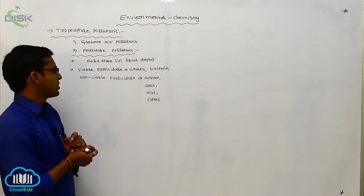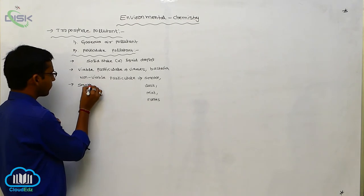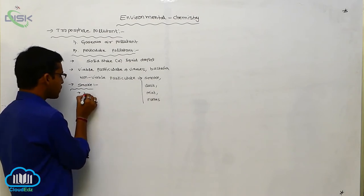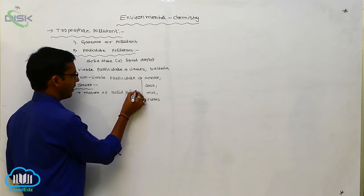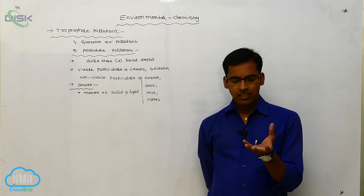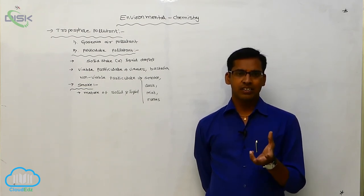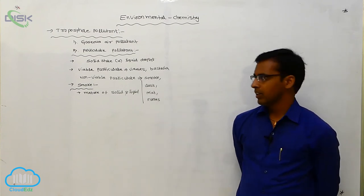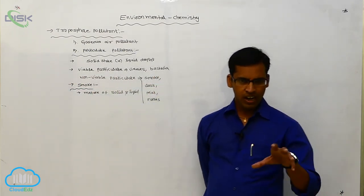The non-viable particulates include smoke, dust, mist, and fumes. Smoke is a mixture of solid and liquid particles. Smoke is produced by the burning of organic compounds — for example, cigarette smoke, oil smoke, or burning of organic compounds.